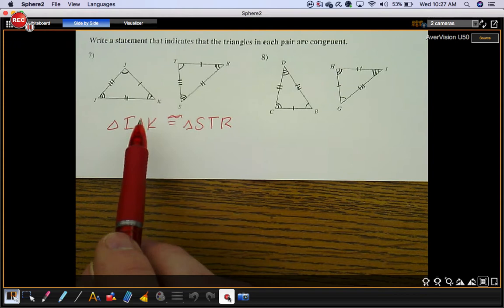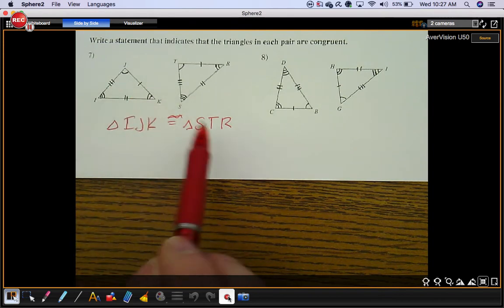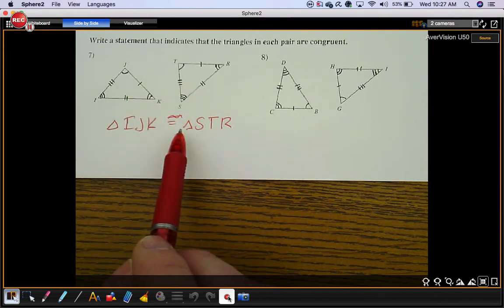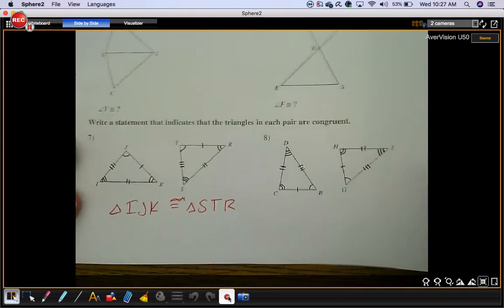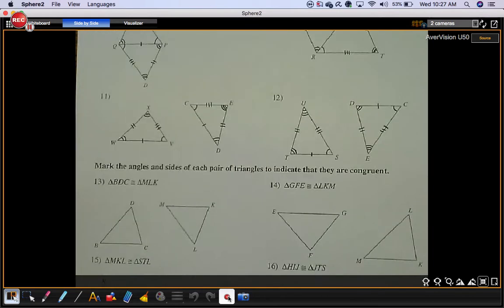So all you need to do for this section is state that one triangle is congruent to the other and just line up the parts. You're going backwards from this. You're writing the congruent statement. That's how you do numbers 7 through 12.